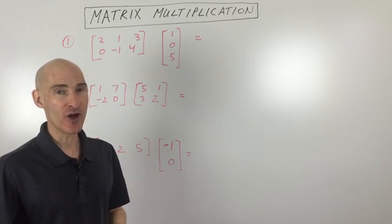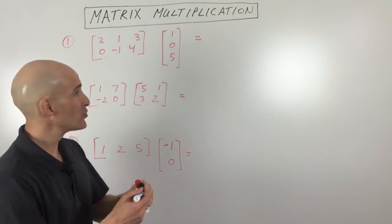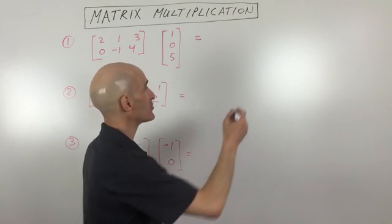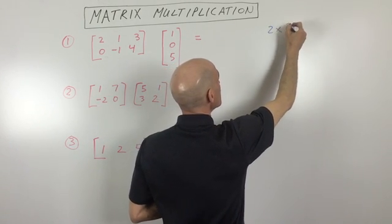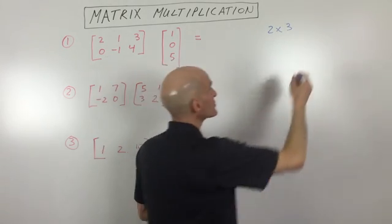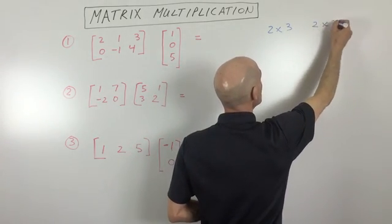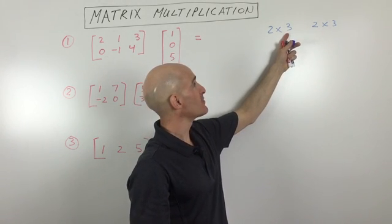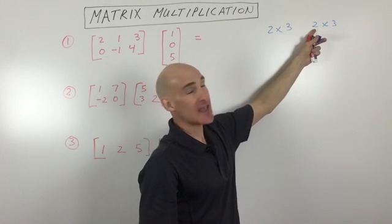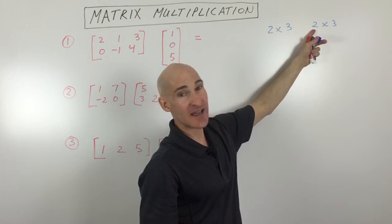Is it even possible to multiply them? Well, the first thing you want to do is analyze the dimensions of the matrix. So if the dimensions are two by three, and the other matrix is also, let's just say, two by three, you won't be able to multiply these matrices. You want the number of columns in the first matrix to be the same as the number of rows in the second matrix.